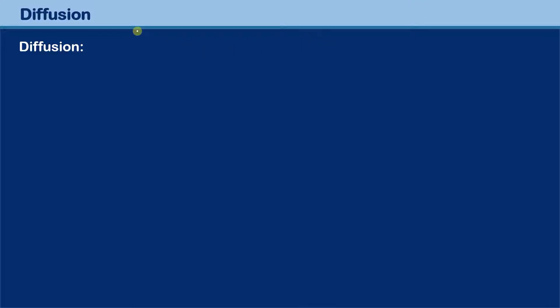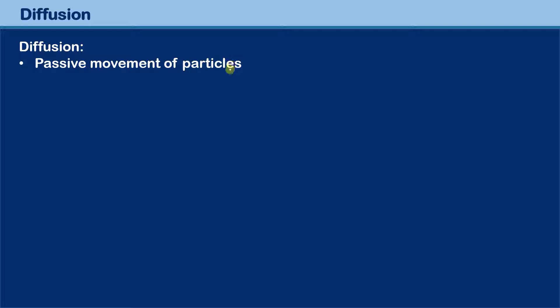In this video I'd like to talk about the process of diffusion. I split up the definition into several lines to explain it step by step. First of all, diffusion is the passive movement of particles. Passive means that there is no extra energy required — there is no need to have an energy input to move these particles.